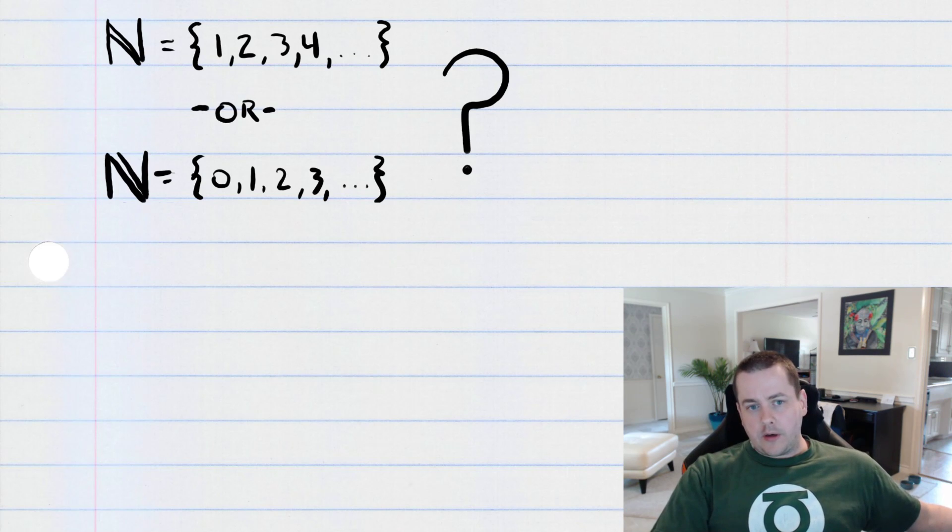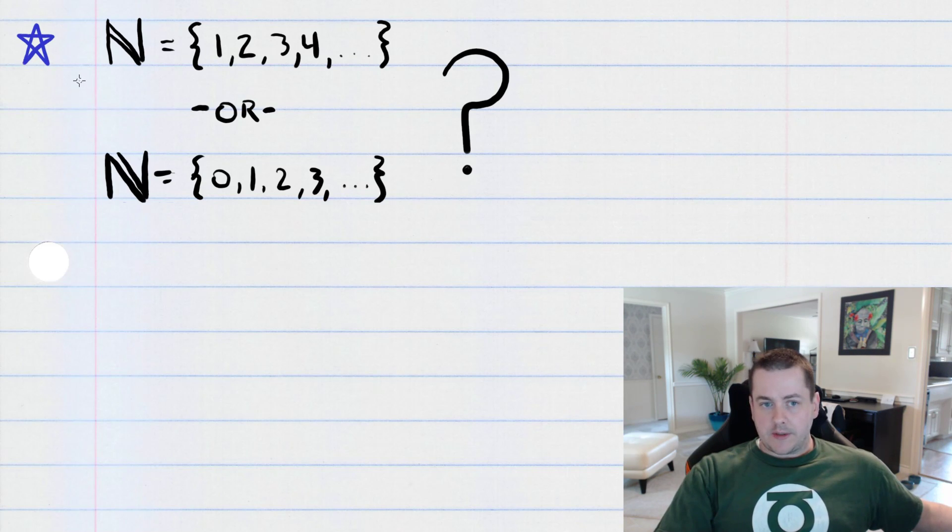Now, if you are an American high school student or an American undergraduate, chances are when I ask, is zero a natural number? You say no, because in your mind, the set of natural numbers is the set containing one, two, three, four, five, and so on.